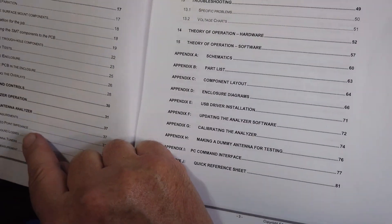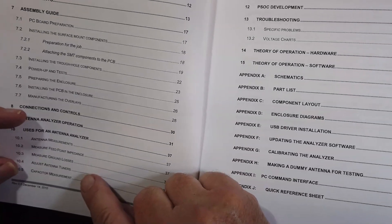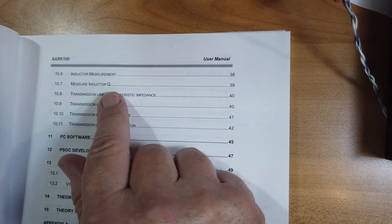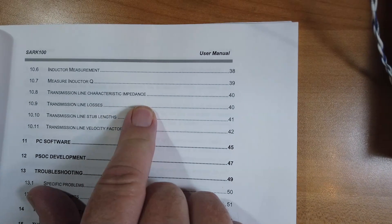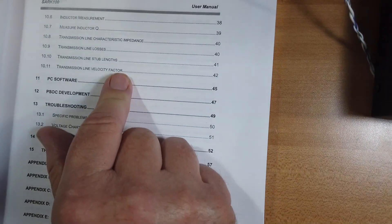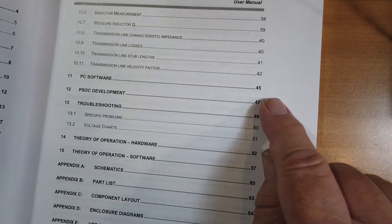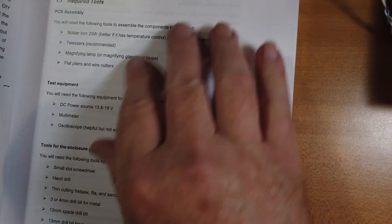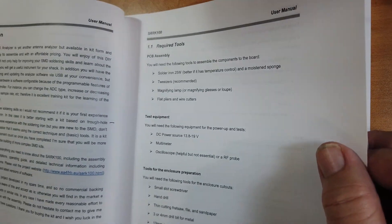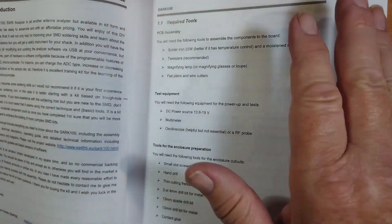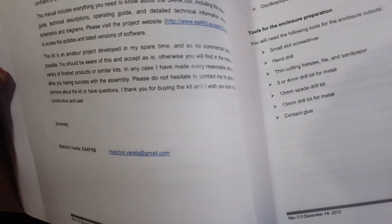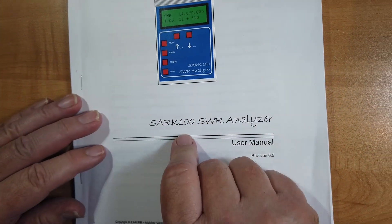Antenna measurements. Feed point impedance. Measuring the ground loss. Adjusting antenna tuners. Capacitor measurement. Inductor measurement. Measure inductor Q. That's nice. Transmission line characteristic impedance. Transmission line losses. Transmission line stub lengths. Transmission line velocity factor. And then there is PC software that is available for this. Note that the PC software is also 12 years old. And if it's 16-bit, it won't work anymore. But why is this not current?